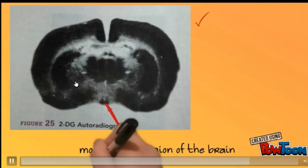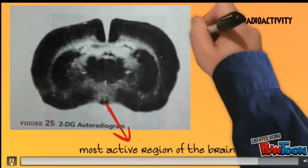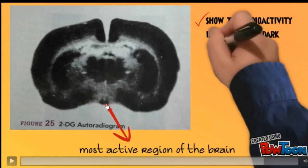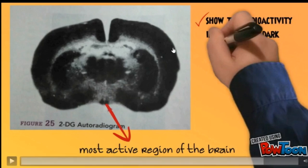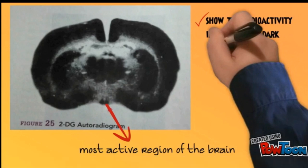After autoradiography, we got such an image. Here, most active region of the brain, because that radioisotope incorporated material is mostly found in this region. It is visualized at the final stage of the autoradiographic procedure using electron microscopy. It will be viewed like that. Dark, highly dark region, that region.